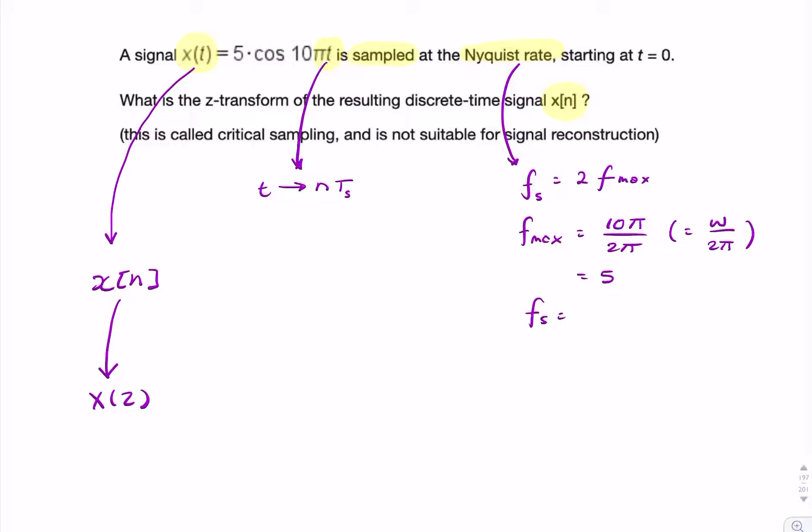So f_max is 5, so therefore the sampling frequency is 2 times 5, which is 10 hertz, and therefore T_s is 1 over 10.